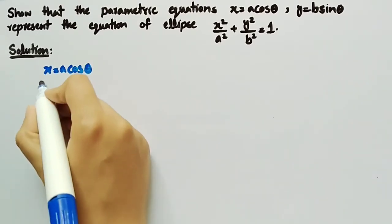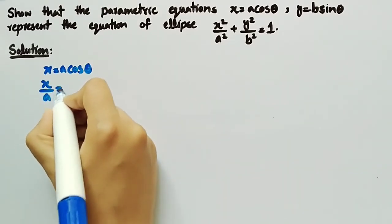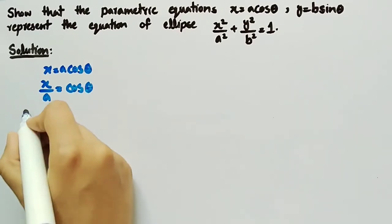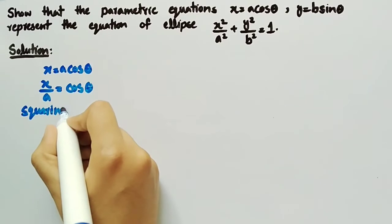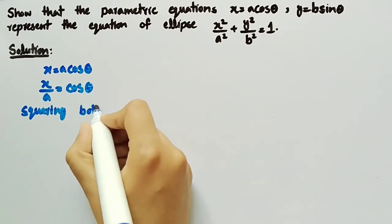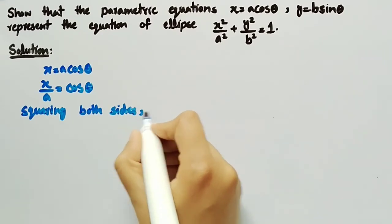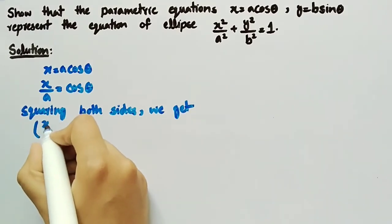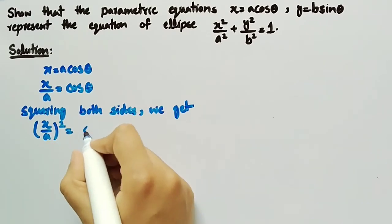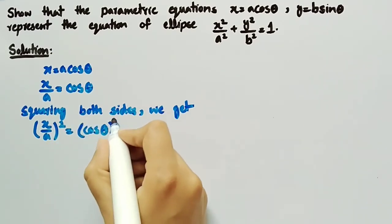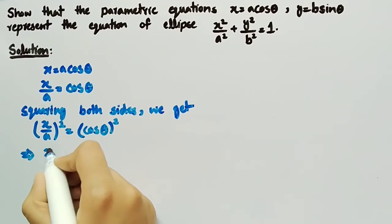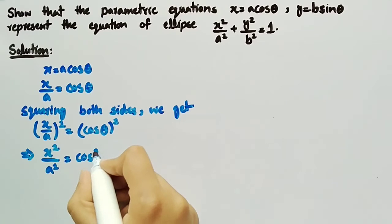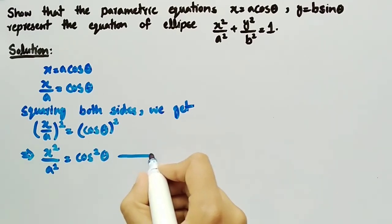We can write this as x/a = cos θ, dividing both sides by a. Now by squaring both sides, we get (x/a)² = cos²θ, which can be written as x²/a² = cos²θ. Let this be named as equation number one.